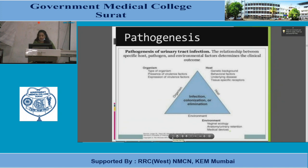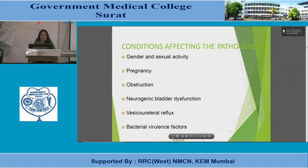The pathogenesis of UTI is the relationship between specific host factors — including genetic background, behavioral factors, underlying disease, and tissue-specific receptors — the pathogen type, presence and expression of virulence factors, and environmental factors such as vaginal ecology, anatomical factors, urinary retention, and medical devices. Host factors affecting pathogenesis include gender, sexual activity, pregnancy, obstruction, neurogenic bladder dysfunction, vesicoureteral reflux, and bacterial virulence factors.